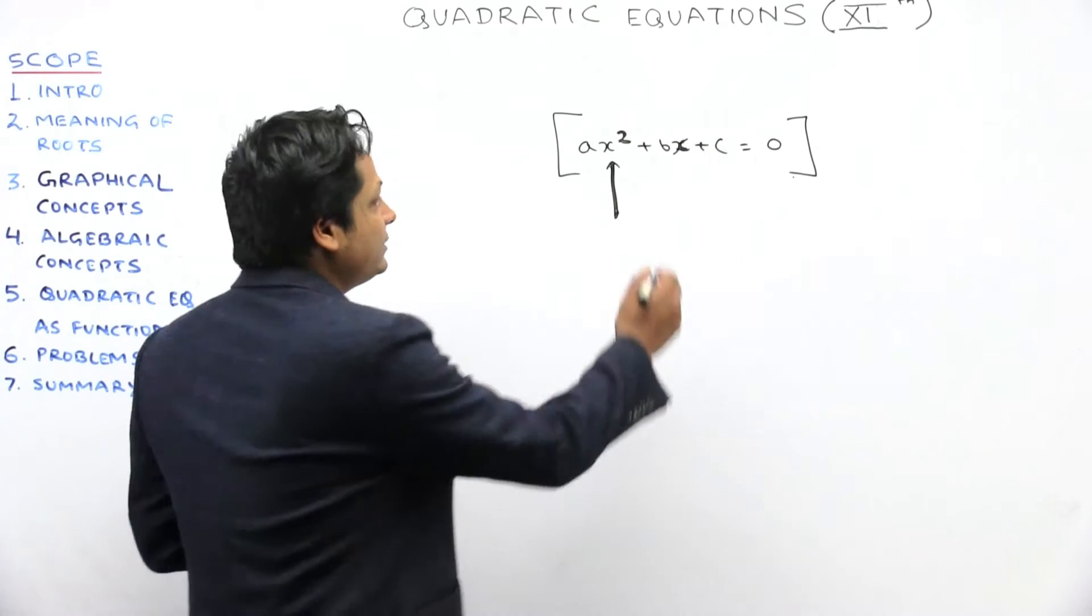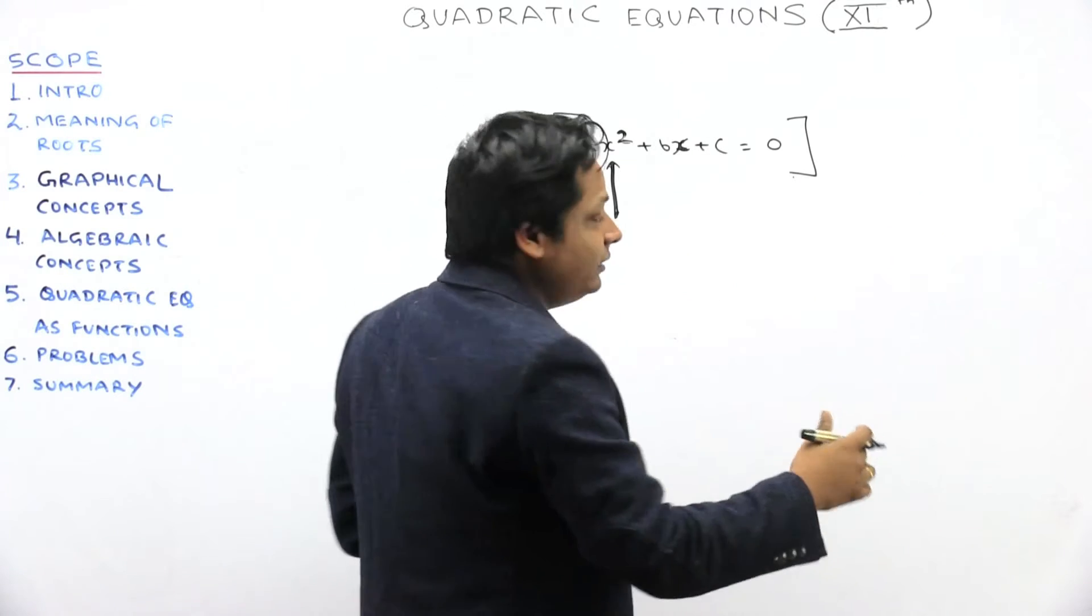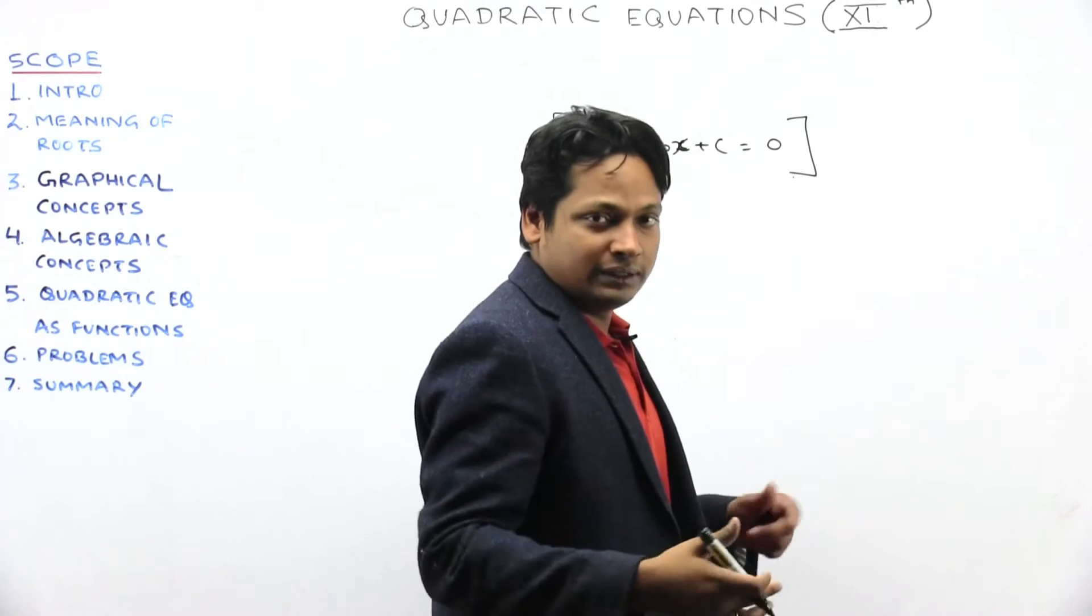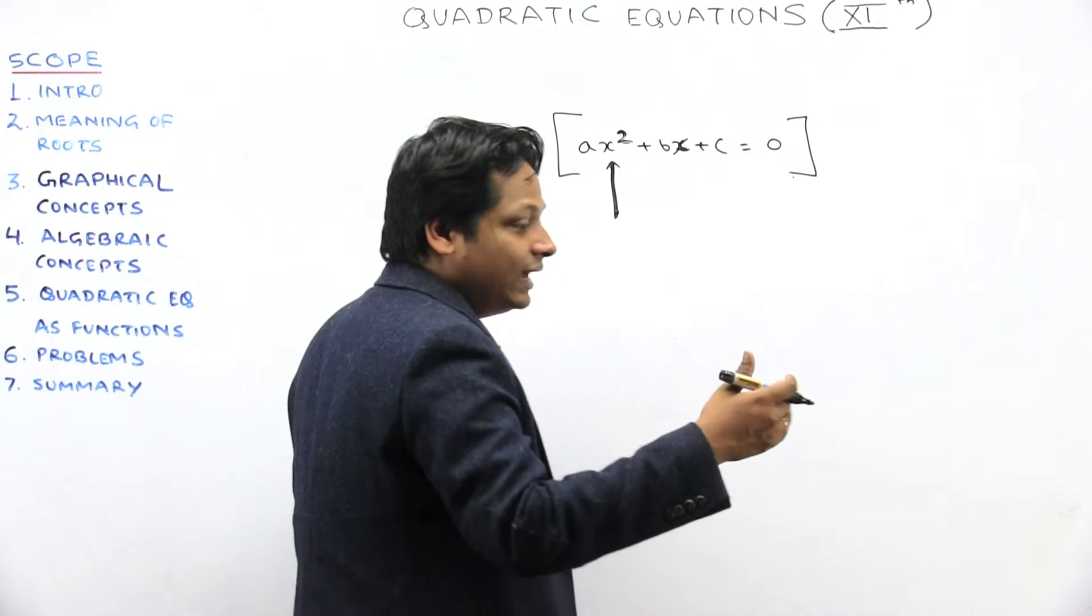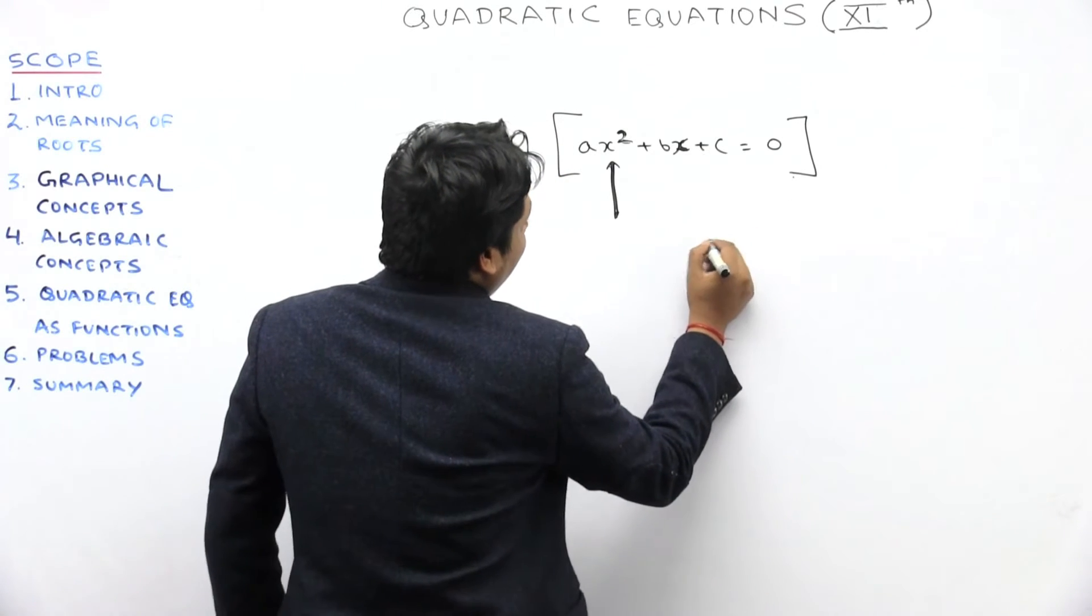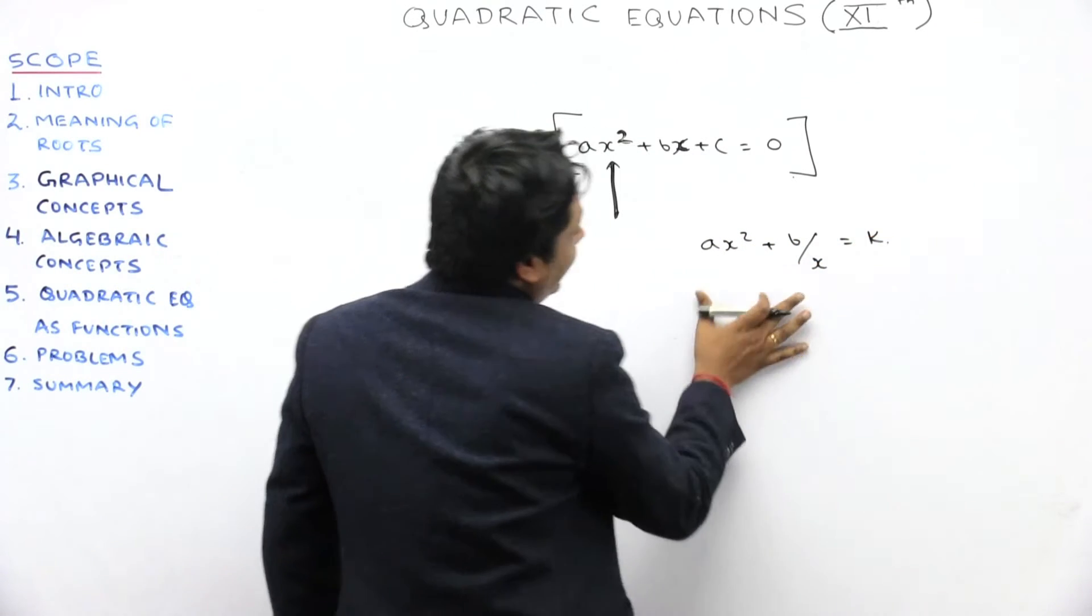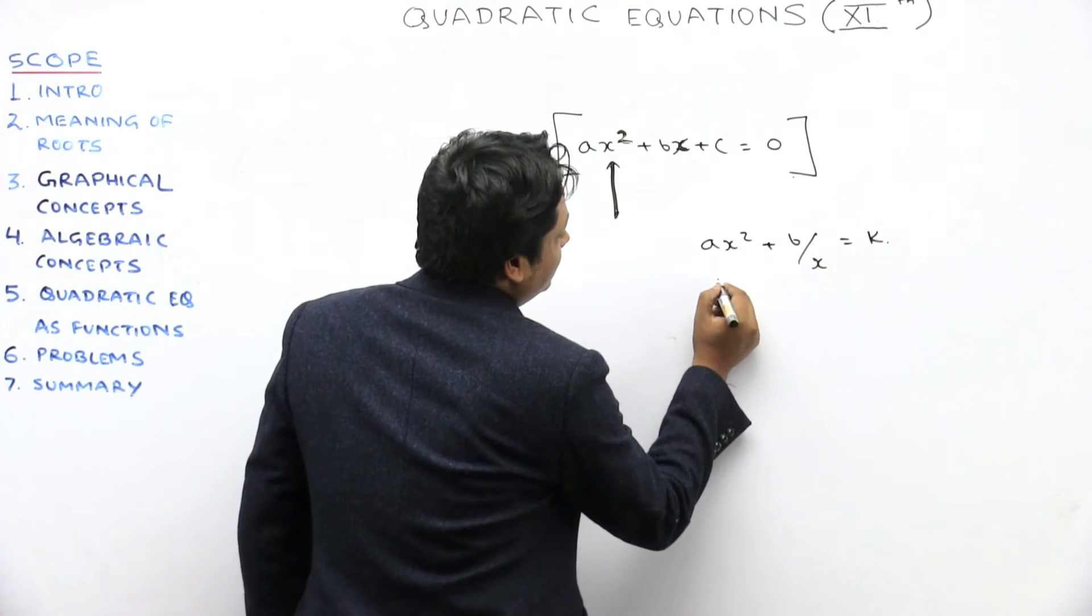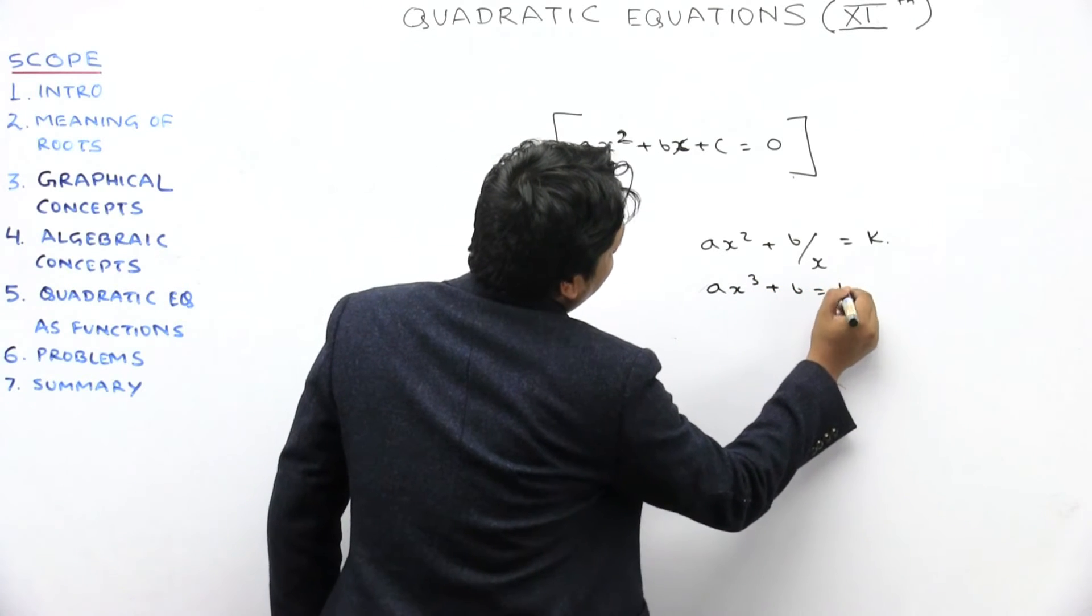The consecutive powers should be positive integers, which is x to the power 1 or 0. If it is in fractions or if x is in the denominator, that will not be a quadratic equation.